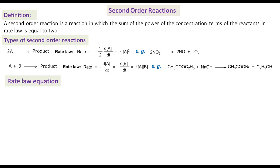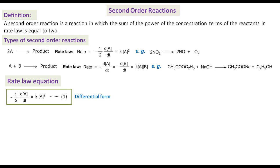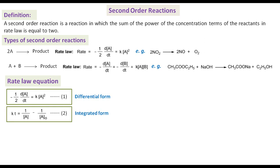Rate law equation for second order reaction. The differential form of the rate law equation for a second order reaction of type 1 is expressed as: -1/2 · dA/dt = KA². After integrating this equation within the concentration limits A₀ to A and time t₀ to t, we get: Kt = 1/A − 1/A₀. This is the integrated form of the rate law equation, where A is the concentration at time t and A₀ is the initial concentration.